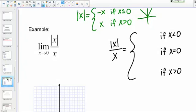What happens when X equals 0? If I plug in X equals 0 to my function, I get 0 over 0. The function is not defined here.